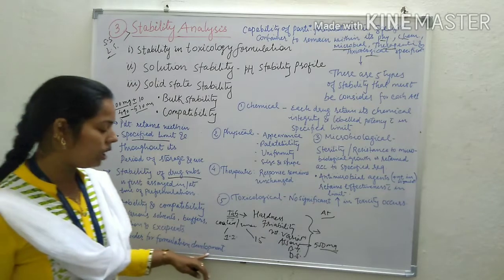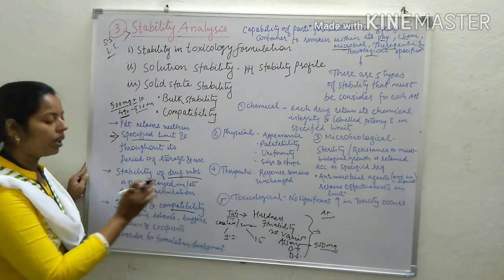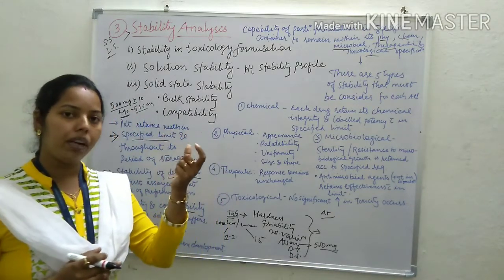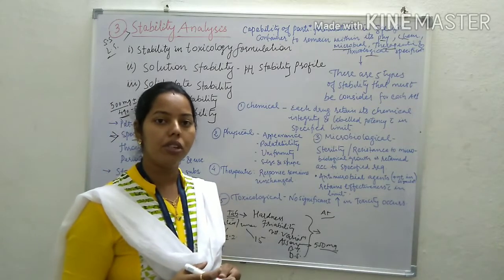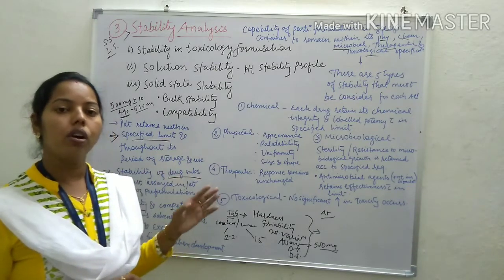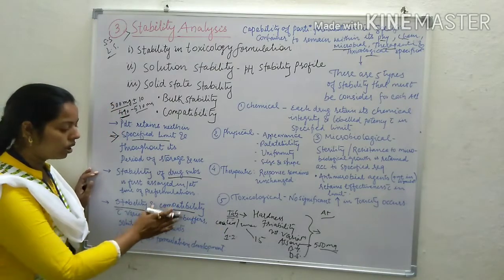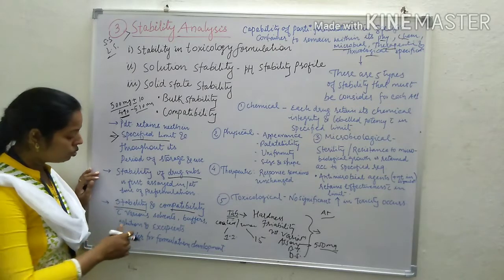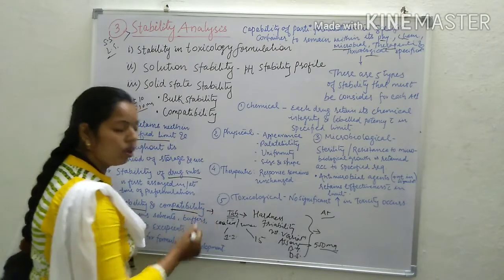In the stability phenomena, we will discuss about compatibility. Compatibility should be there between the formula components — compatibility of API or drug along with its additives or excipients used in manufacturing any dosage form. We will find out the compatibility of solids with liquids, solids with solids, and liquids with liquids. If the formula is compatible, then we go for manufacturing of the dosage form.